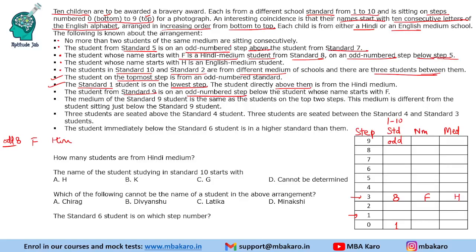With F confirmed on step 3, standard 9 is on step 1 — an odd-numbered step below F. Since names are arranged alphabetically from bottom to top with F on step 3, we assign: step 0 = C, step 1 = D, step 2 = E, step 3 = F, step 4 = G, step 5 = H, step 6 = I, step 7 = J, step 8 = K, step 9 = L. Also, the student directly above standard 1 (on step 1) is Hindi medium, so D is Hindi medium.